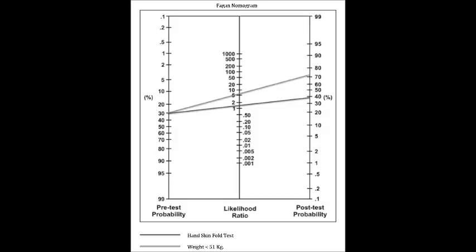The physician sees that after charting these values on the Fagan nomogram, the post-test probability is about 70%. This is about 30% more than the post-test probability of the hand-skin fold test. Because of this, the physician would choose the weight test when they need to rule in the diagnosis of osteoporosis in patients presenting with symptoms of this condition.